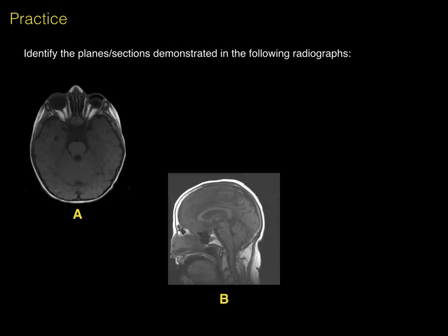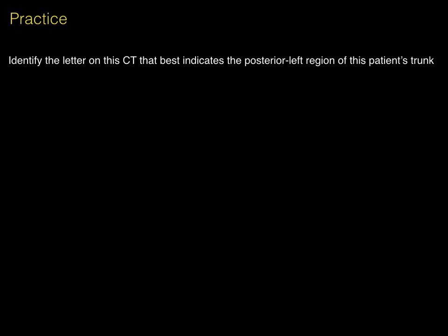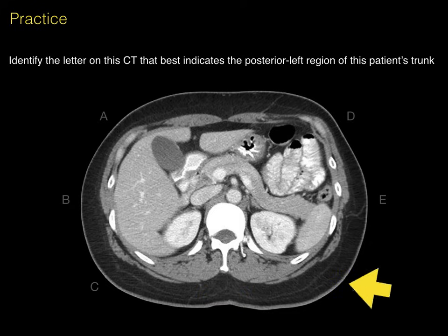Let's do a little practice. Identify the planes and sections demonstrated in the following radiographs — A, B, and C. A is showing an axial plane, demonstrating anterior and posterior and right and left orientation. B is a sagittal plane, showing anterior and posterior and superior and inferior relationships. C is a coronal plane, showing left and right and superior and inferior relationships. Next, identify the letter on this CT that best indicates the posterior left region of this patient's trunk. The answer is letter F.